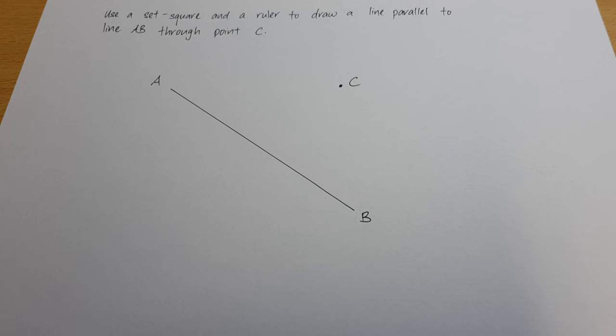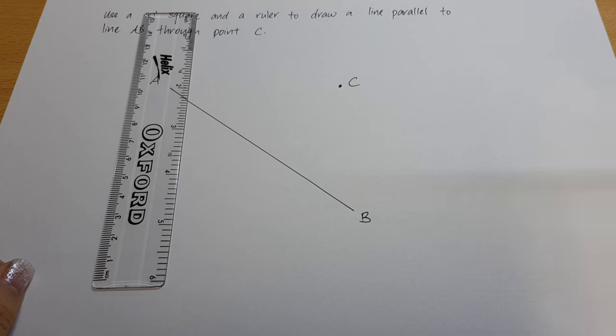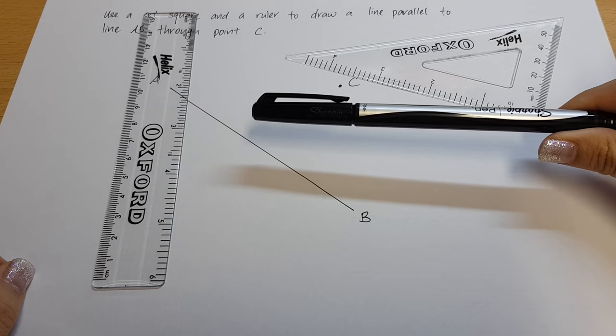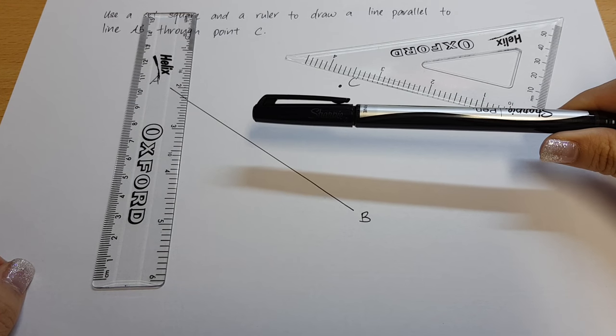Hello everyone, today we will learn how to draw parallel lines. To begin, we will need a ruler, a set square, a pen or pencil, and possibly an eraser.